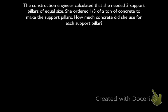Alright, so we have the problem that says that the construction engineer calculated that she needed 3 support pillars of equal size. She ordered 1 third of a ton of concrete to make the support pillars. How much concrete did she use for each support pillar? If we go through, we'll see that she needs 3 support pillars, and that she ordered 1 third of a ton of concrete. She's going to split that concrete among each pillar so that each one has the same amount. And we're looking for how much concrete she used for each support pillar.